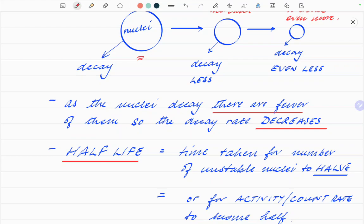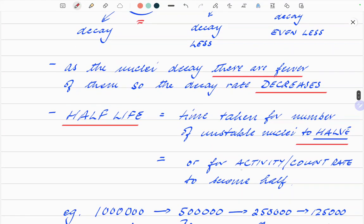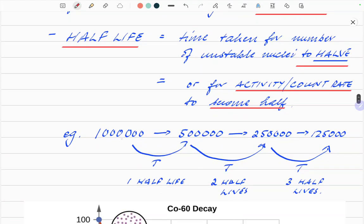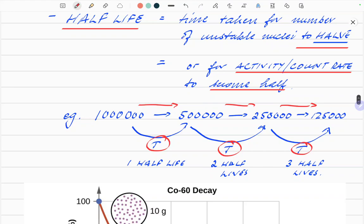The time taken for number of unstable nuclei to halve. That can also be described as the activity or the count rate to become half of whatever you're starting with. For example, if you have a million, you're going to 500,000, then 250,000, then 125,000. The time taken for each halving is the same. Call it T. After one half-life, you've got half. After two half-lives, you've got a quarter. After three half-lives, you've got an eighth.